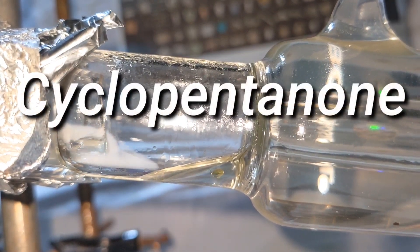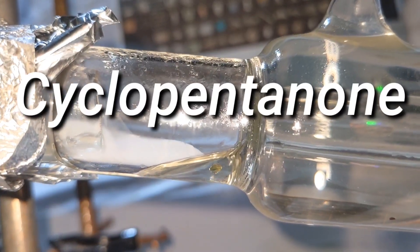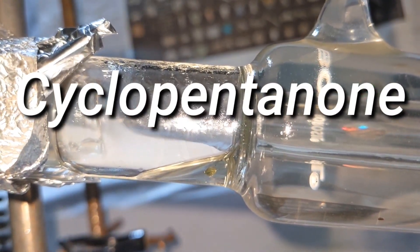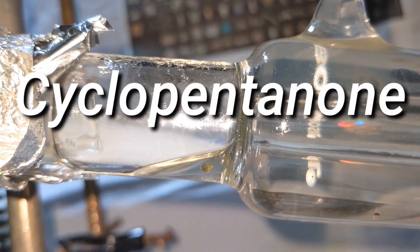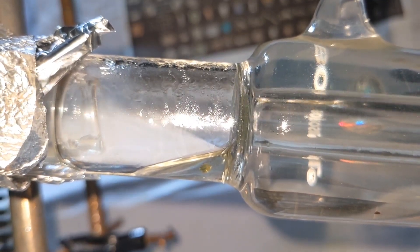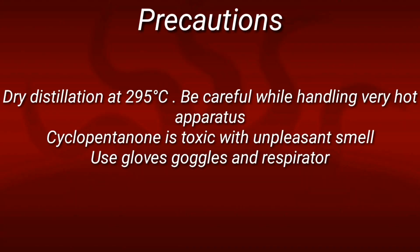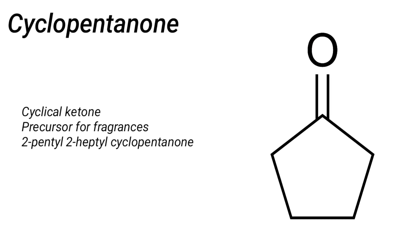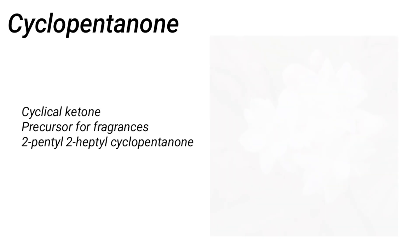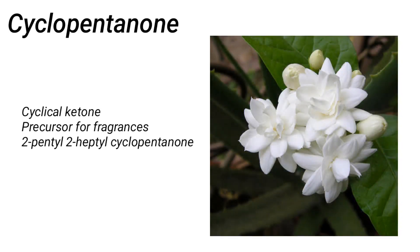In this video we make cyclopentanone by the dry distillation of adipic acid. Cyclopentanone is a cyclic ketone — a colorless, volatile liquid and a common precursor to fragrances like jasmine, which contain two-pentyl or two-heptyl cyclopentanone.